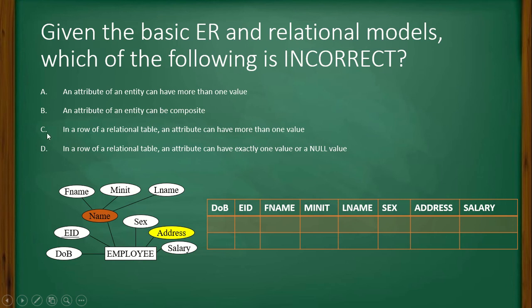So option C is the answer. And D is, in a row of a relational table, an attribute can have exactly one value.